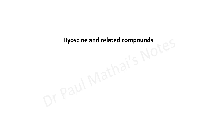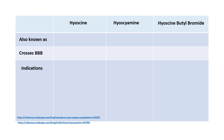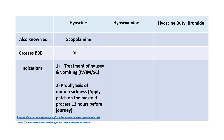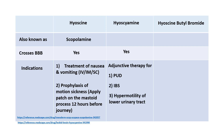Hyosine, also known as scopolamine, crosses the blood-brain barrier and is commonly used for the treatment of nausea and vomiting, and more importantly for prophylaxis of motion sickness. Hyosine also crosses the blood-brain barrier and is useful as an adjunctive therapy for peptic ulcer disease, irritable bowel syndrome, and hypermotility of the lower urinary tract. Hyosine butyl bromide (HBB) does not cross the blood-brain barrier and is commonly used as a GI antispasmodic.